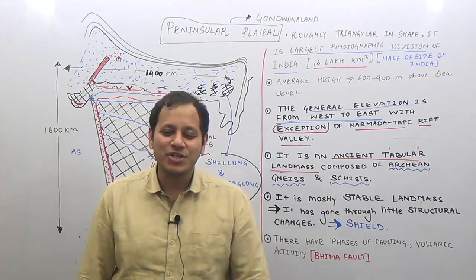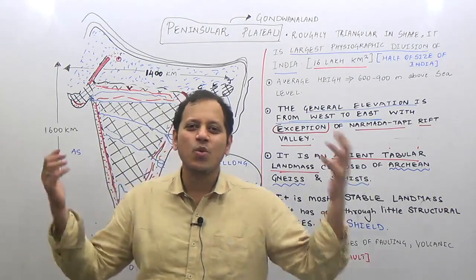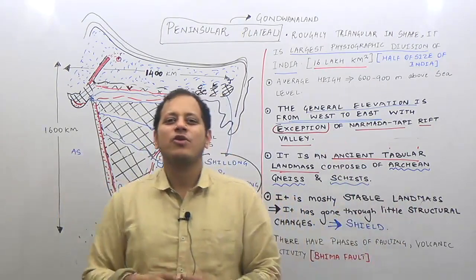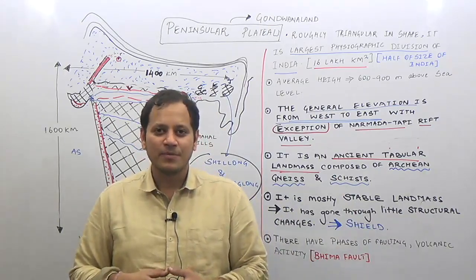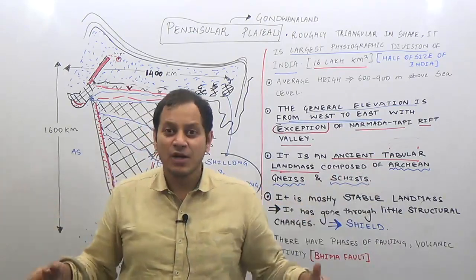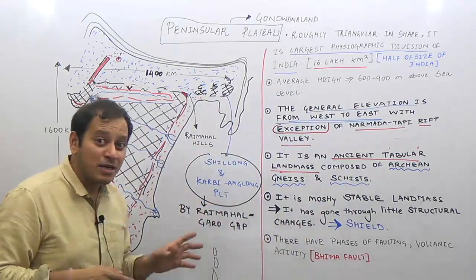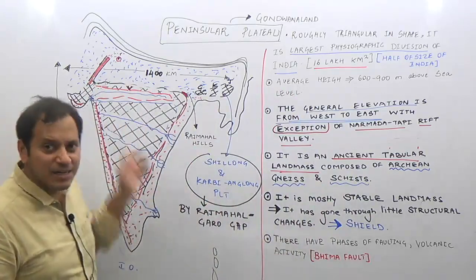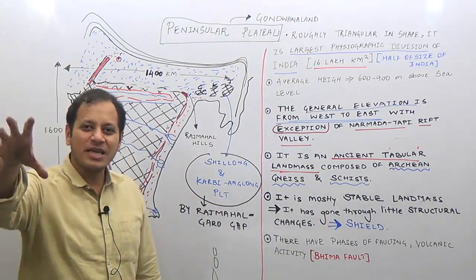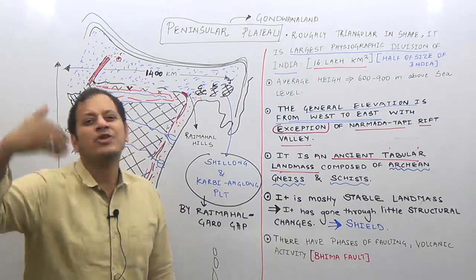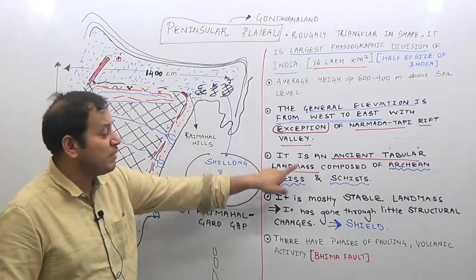Ancient land is old land. Old land, as you recall from geomorphology, generally has flat and rocky terrain without deep valleys or high mountains. The same applies to the peninsular plateau — except for some hill ranges, it is extremely flat, rocky, and has senile topography. Therefore, it is an ancient tabular landmass.